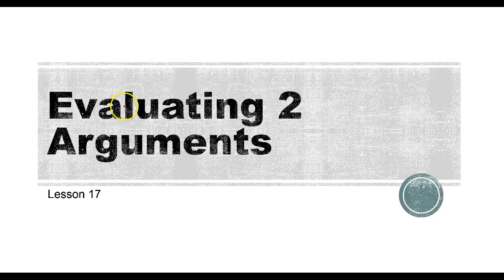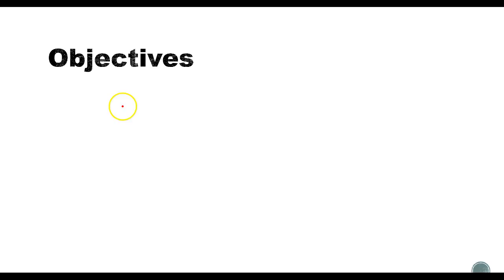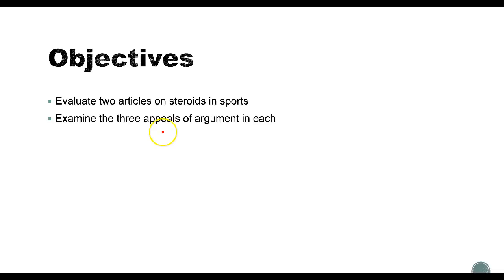Welcome to lesson 17. In this lesson, we're actually going to evaluate the two arguments that you read and analyzed for journal 4 — the two articles on steroids and sports: 'Destroyed' by Pedro Martin and 'The Designer Player' by Rodrigo Villagomez. We have three objectives: evaluate the two articles, evaluate them in terms of the three appeals each argument uses, and draw a conclusion about which argument is stronger. That's what I'll want you to do for journal 5, which I'll give you in lesson 18.